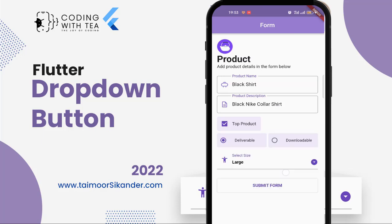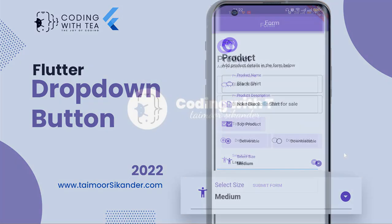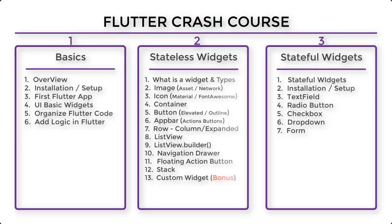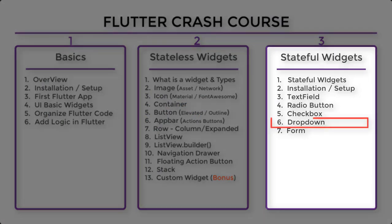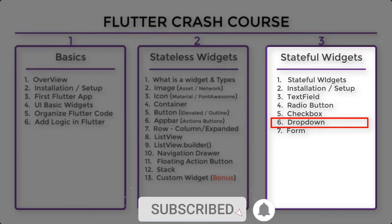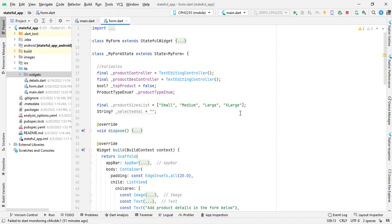In today's video we will learn how to create this dropdown — basically two types of dropdowns will be covered: the simple dropdown button and the dropdown form field. We are in section 3, about to create the second-to-last video of this section and playlist. In the last tutorial we will create a complete form, validate all fields, pass data to the next screen, and learn how to use a global key in the form. Stick together, watch the video till the end, and don't forget to hit the subscribe button.